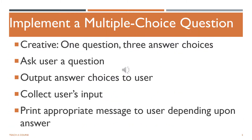For this sample program, you will implement a single multiple choice question in Java. You will come up with a question as well as three possible answer choices. One of these choices should be the correct answer. Using your knowledge of control flow and input and output, you will ask the user the question and provide the possible answer choices. The user will respond with one of these choices. If the user is correct, we will print out a congratulations message. If the user is incorrect, we will print out that the user is incorrect as well as what the correct answer choice is.